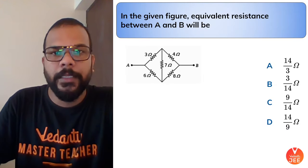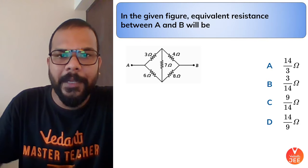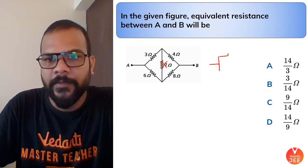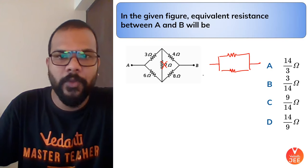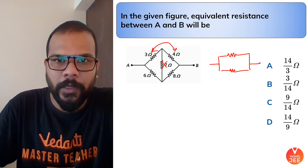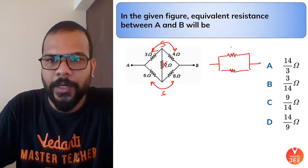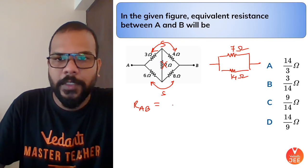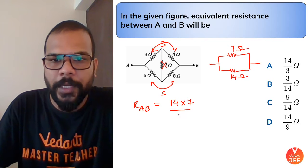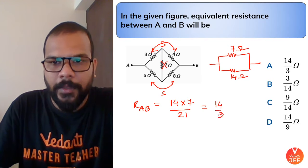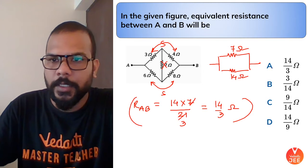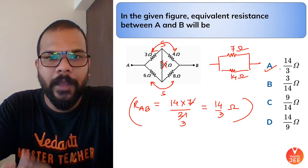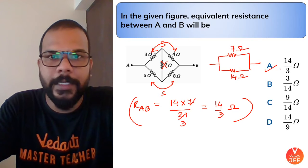Next: find the equivalent resistance between A and B. Check ratios: 3/6 = 1/2 and 4/8 = 1/2 — Wheatstone bridge condition satisfied. Remove the middle branch. Then 3 and 4 are in series = 7 ohms; 6 and 8 are in series = 14 ohms. These two combinations are in parallel: (14 × 7)/(14 + 7) = 98/21 = 14/3 ohms. Answer is option A.